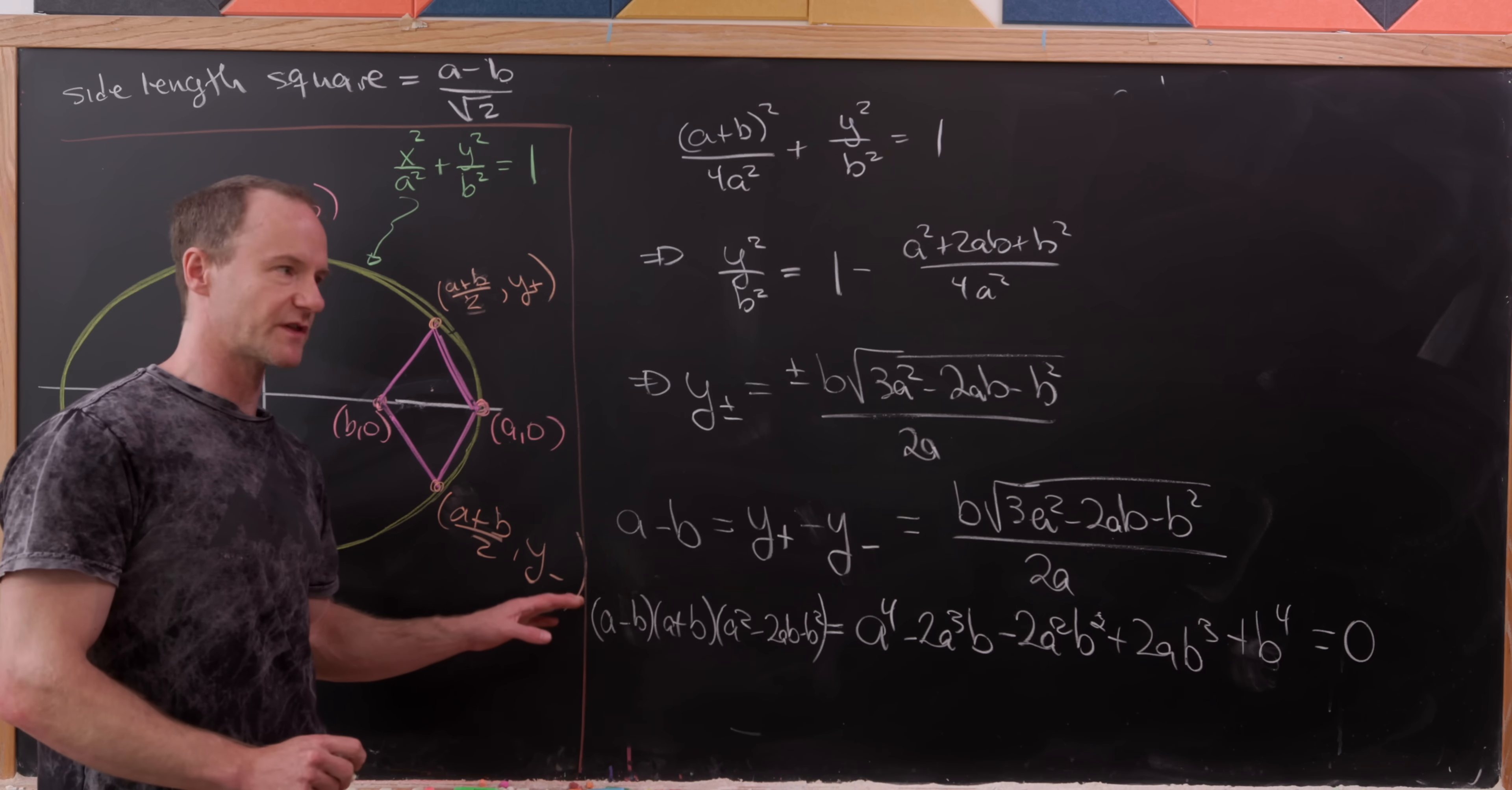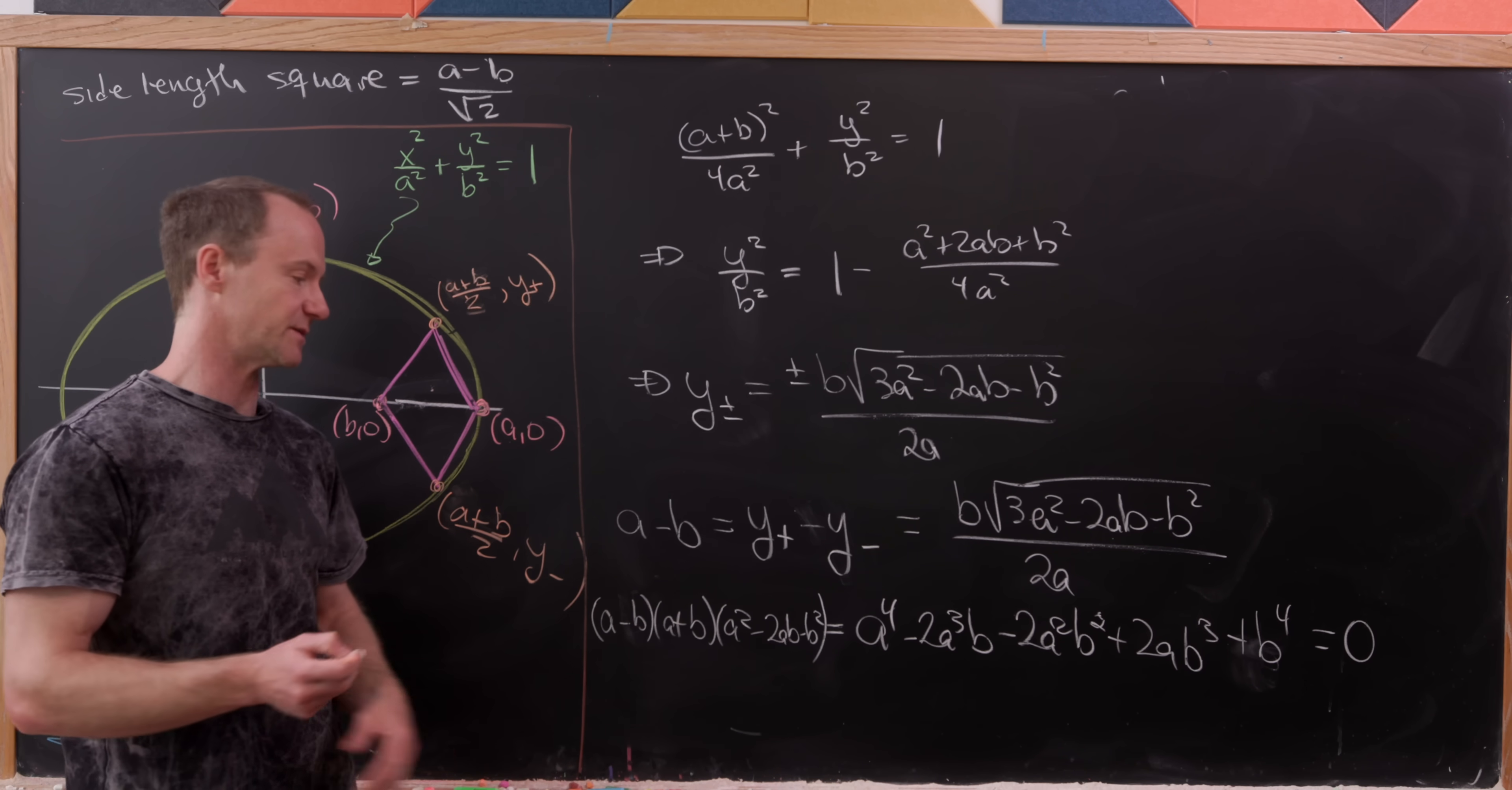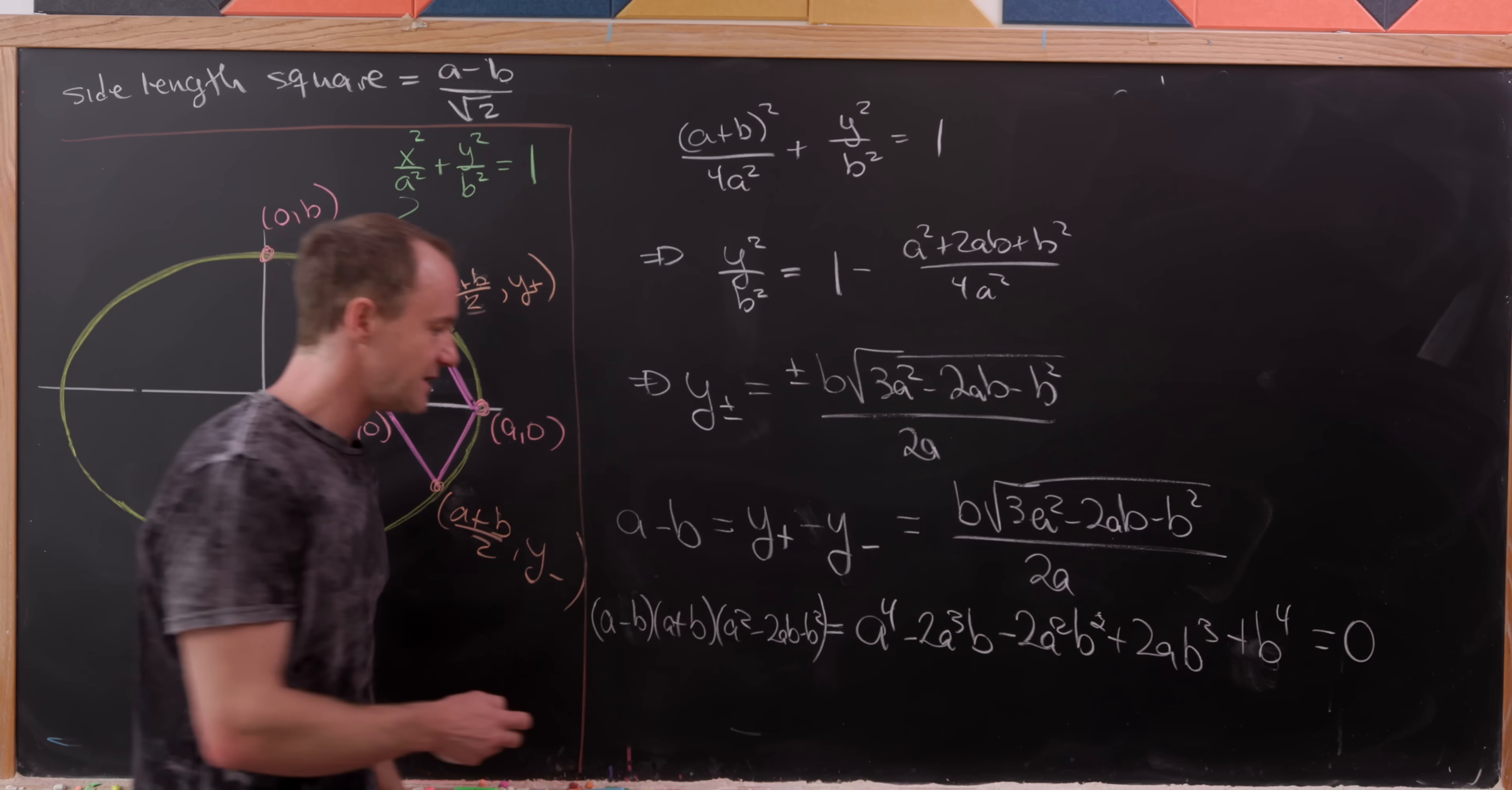Now, of course, we're not working with a circle here because if we were working with a circle, no such square would exist in the first place. So we know that a is not equal to b.